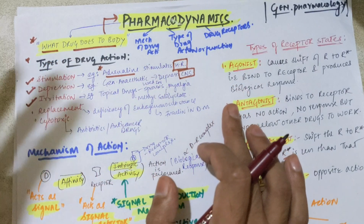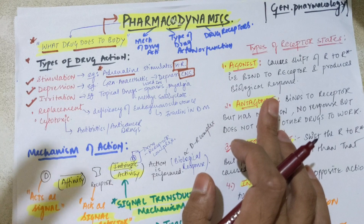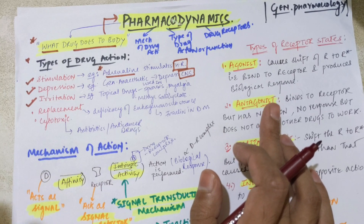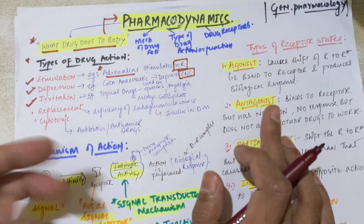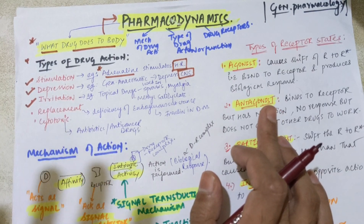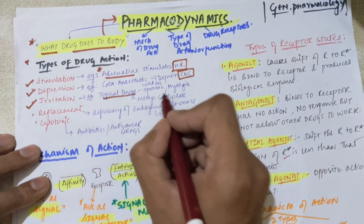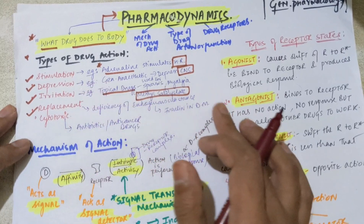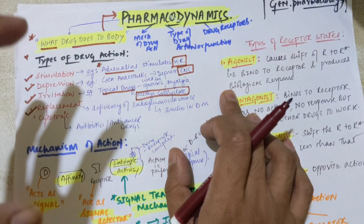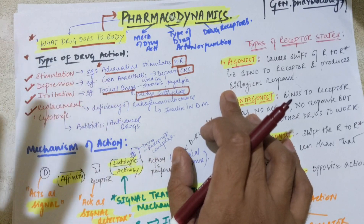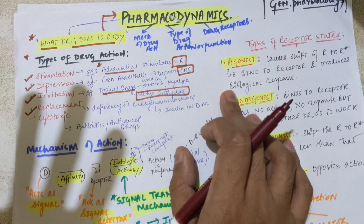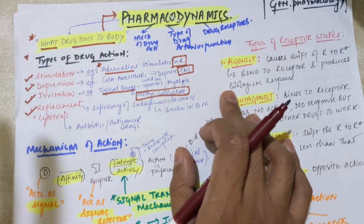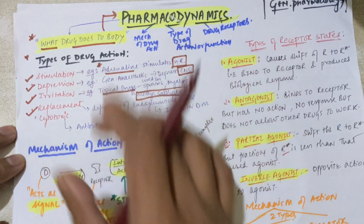Next comes irritation. This refers to topical drugs used on the skin, like when the patient has pain, sprains, myalgia, or joint pains. Drugs used in that case — such as methyl salicylate — are called irritants; that action is called irritation. Then we have replacement. Replacement means addressing a deficiency of any substance inside the body. For example, insulin is an endogenous substance — if there is a deficiency of insulin in diabetes mellitus, we can give insulin from outside as a replacement for that endogenous substance.